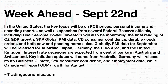Global PMI data for September will be released for Australia, Japan, Germany, the Euro area, and the United Kingdom. Interest rate decisions are expected from central banks in Australia and Switzerland, and key inflation data will come from Australia. Germany will release its IFO business climate, GFK consumer confidence, and employment data, while Canada will report GDP growth for August. So lots going on this week.